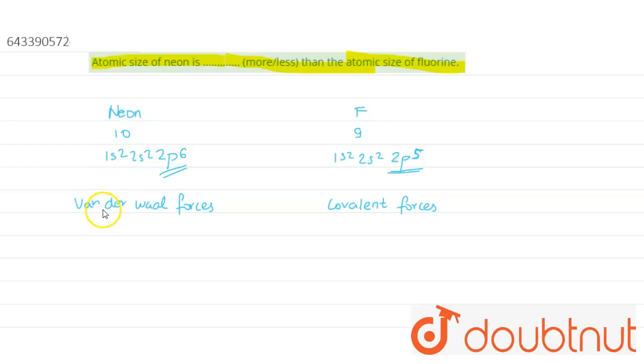So neon, because of these van der Waals forces—van der Waals forces are always weaker than covalent forces—the nucleus will have less pull towards the outer electrons of neon. So that's why the atomic size of neon will be bigger.